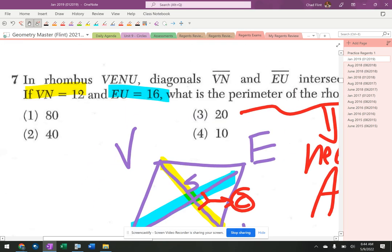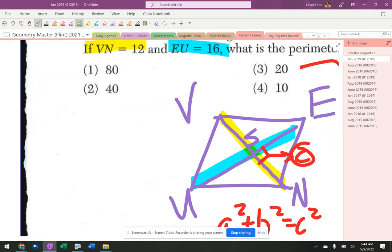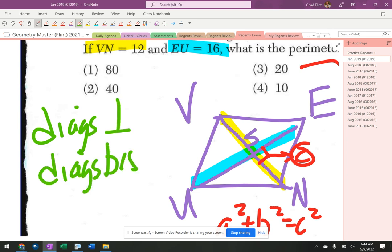Because those are the whole diagonals. And what also happens in here is the diagonals, let's write perpendicular first because we already used that, and the diagonals bisect each other.